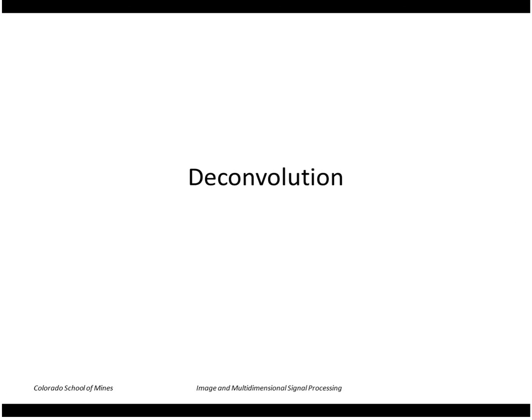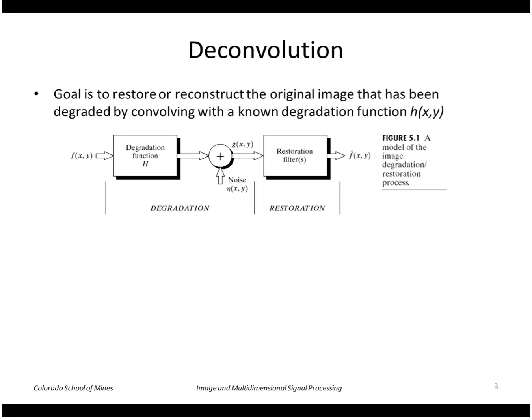Today's lecture is on deconvolution. This is a topic that is part of the general topic of image restoration, where the goal is to restore or reconstruct the original image that has been degraded by convolving with a function h and then optionally adding noise to that degraded function to produce our degraded image g. What we want to do is create a filter that will try to restore the image to get an approximated version of the original image f.